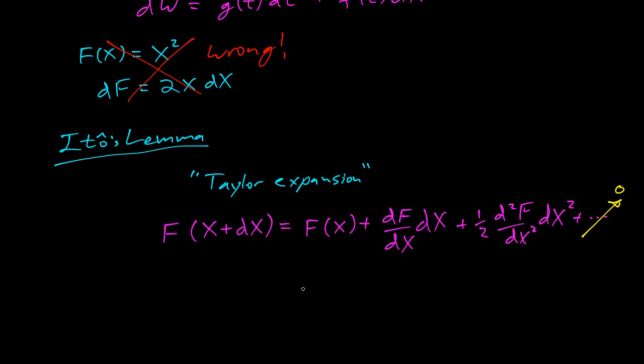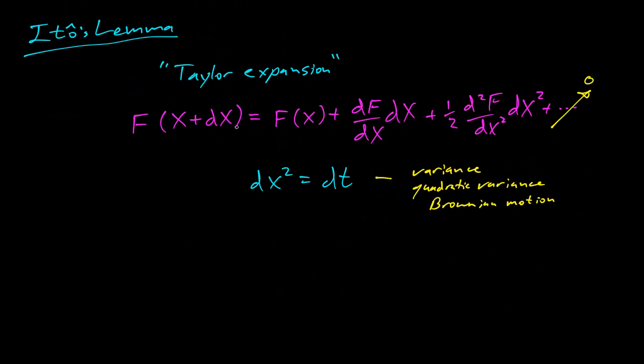The next thing is a rule of thumb that dx² equals dt. So why would that be? This actually makes a lot of sense to me. So this is not actually true. This is false. But this makes sense because of a lot of the calculations we've been doing with variance and quadratic variance. And so if you've worked out these calculations, this should be totally unsurprising.